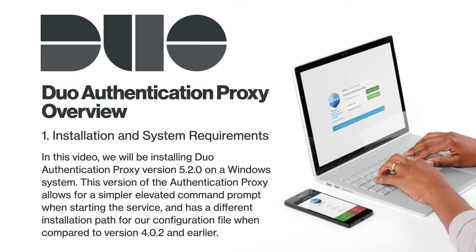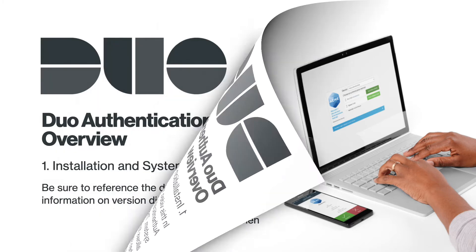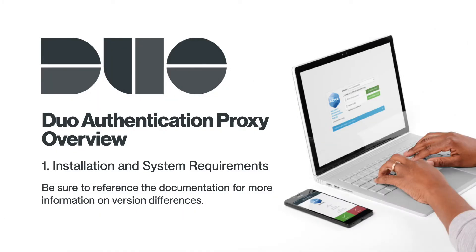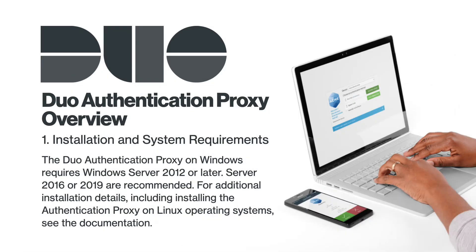In this video, we will be installing Duo Authentication Proxy version 5.2.0 on a Windows system. This version allows for a simpler elevated command prompt when starting the service and has a different installation path for our configuration file compared to Authentication Proxy version 4.0.2 and earlier. Be sure to reference the documentation for more information on version differences. The Duo Authentication Proxy on Windows requires Windows Server 2012 or later; Server 2016 or 2019 are recommended. For additional installation details, including installing on Linux, see the documentation.